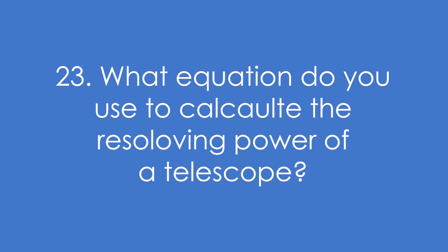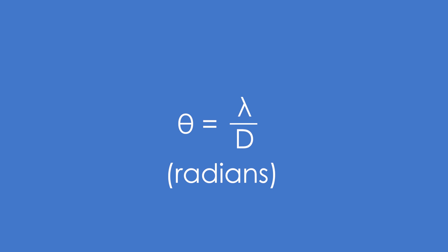Question 23: What equation do you use to calculate the resolving power of a telescope? It's the Rayleigh equation. Theta in radians is equal to the wavelength observed divided by the diameter d of the telescope.